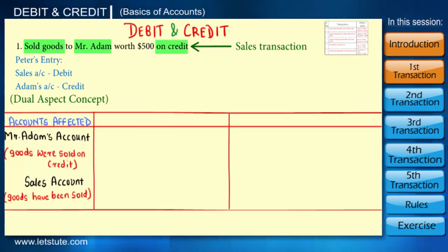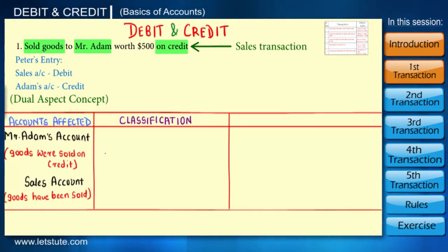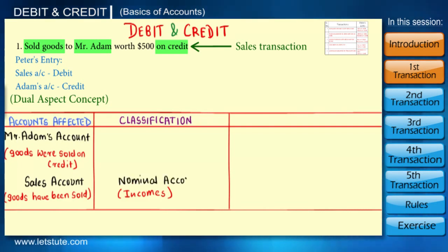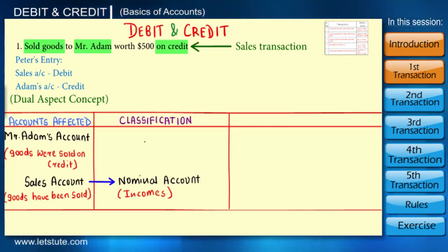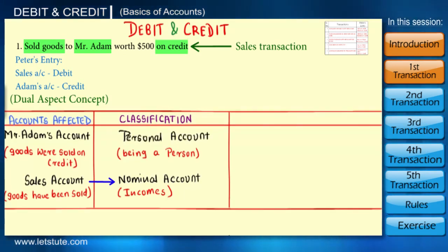The next step is to classify these accounts into real, personal, and nominal, as we discussed in our previous session. All income comes under the nominal account, therefore sales is a nominal account. And accounts which relate to a person come under the personal account, so Adam's account is a personal account.